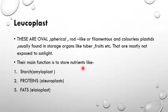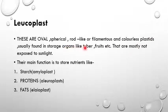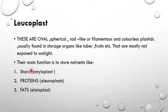Leucoplasts are oval, spherical, rod-like or filamentous and colorless plastids usually found in storage organs like tubers and fruits. They are mostly not exposed to sunlight. Their main function is to store nutrients: starch in the form of amyloplasts, proteins as aleuroplasts, and fats as elaioplasts.